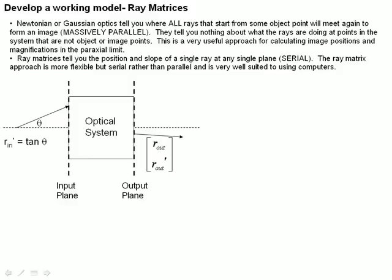Every single ray of light from some point will meet at this particular plane and form an image. But this approach tells us nothing about what rays are doing at points in the system that are not an object or image point.